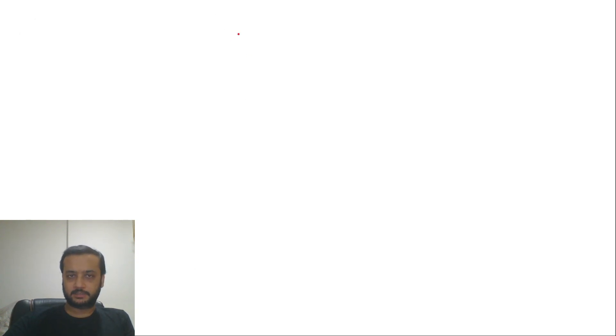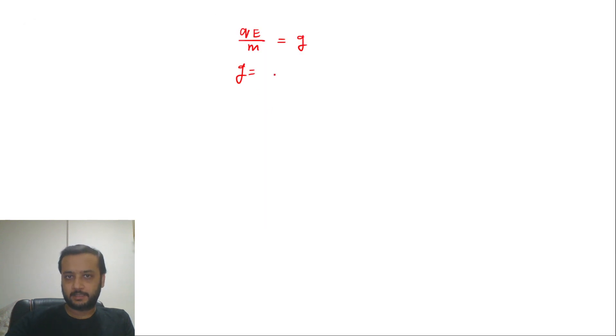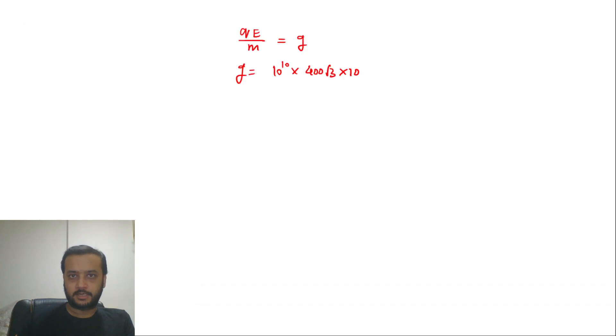We can say that the apparent gravity or effective gravity, its value we can find from qE/m. So g ki value a jaegi qE/m. q/m ka value question me 10 to the power 10 diya gaya tha and electric field ki value 400 root 3 into 10 to the power 10.